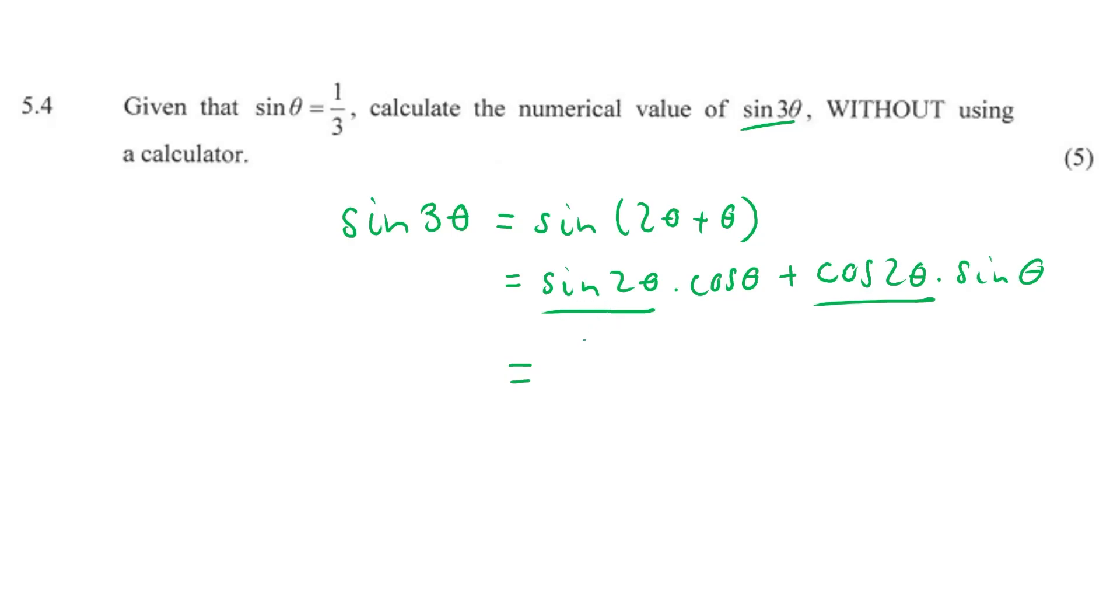So let us expand. So sine 2 theta, if we expand, that's going to be 2 sine theta cos theta times cos theta plus. Now look, with this cos 2 theta, we can use pretty much anything. But since we are dealing with another sine here as part of the same term, maybe let's just use the cos double angle expansion, the one with sine.